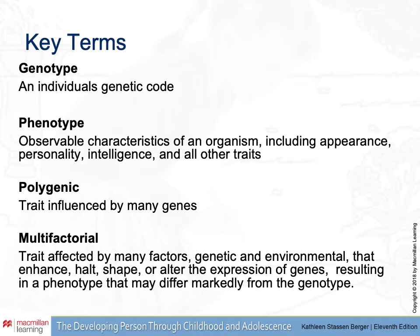When a trait is described as polygenic, that means that trait is influenced by many genes, so several different genes have to come together in order for a certain trait to be expressed. Intelligence, for example, is thought to be a polygenic trait. Multifactorial is the term we use when a trait like intelligence is affected by many factors — both genetic and environmental — as well as things that are happening around the person.